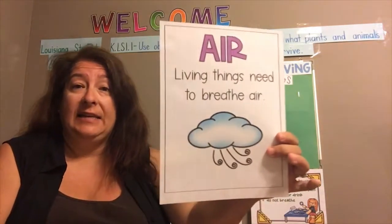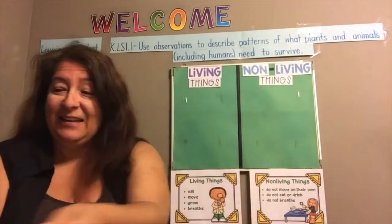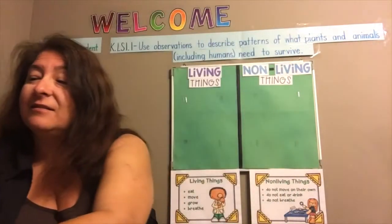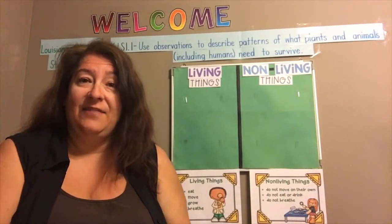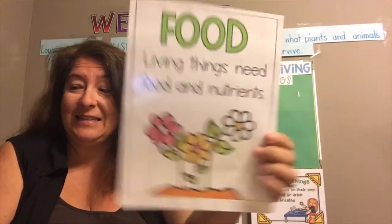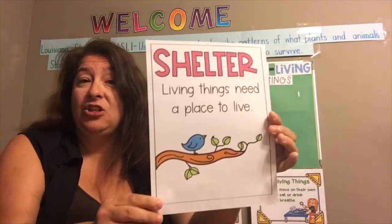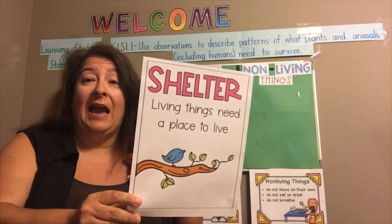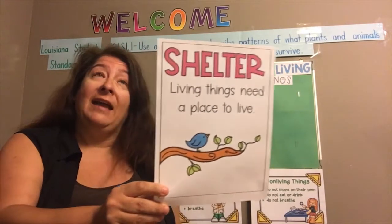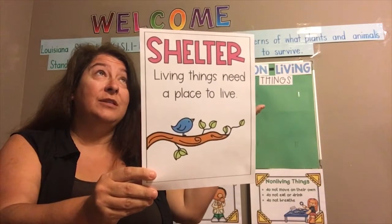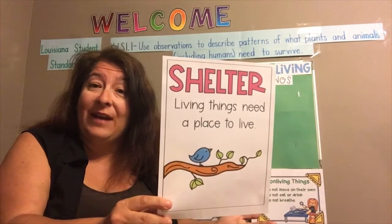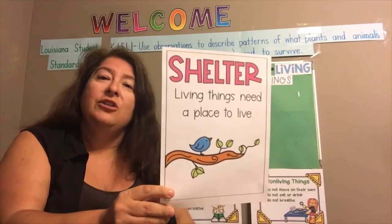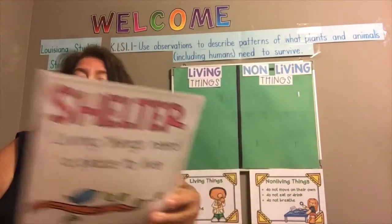Living things need air to breathe. Living things also need water to drink. Living things need food or nutrients to eat. And living things need shelter or a place to live. Remember, shelter can look very different for different types of living things. I am a living thing and I live in a house, but a crocodile or an alligator lives in the water, and plants live in the ground, in the soil.